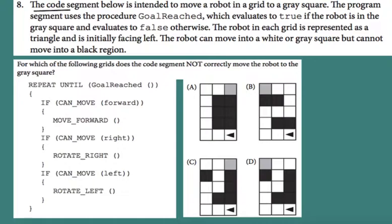We are looking for the grid — one of these grids — where this code segment will not work, will not take the robot to the goal, which is the gray square.